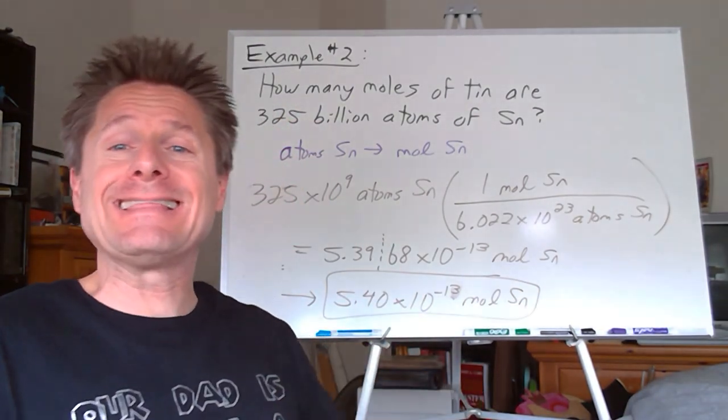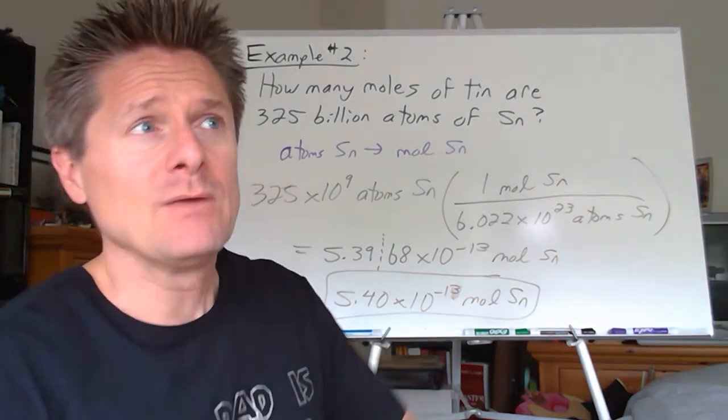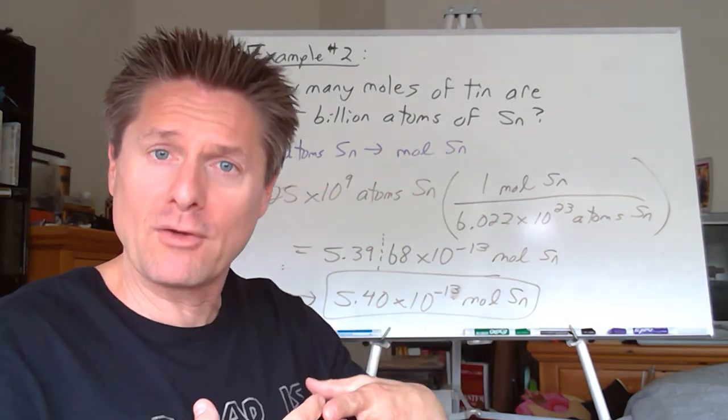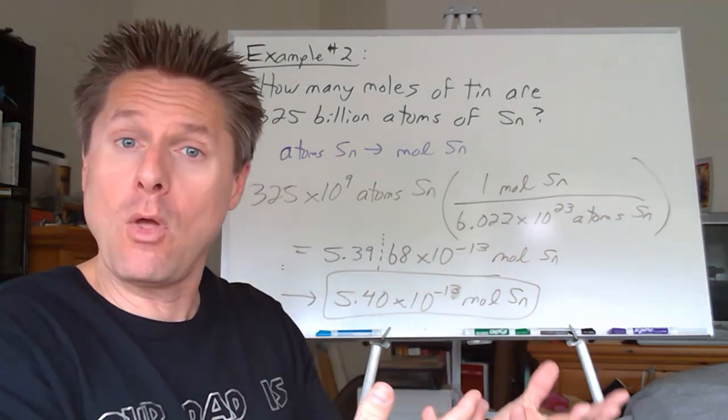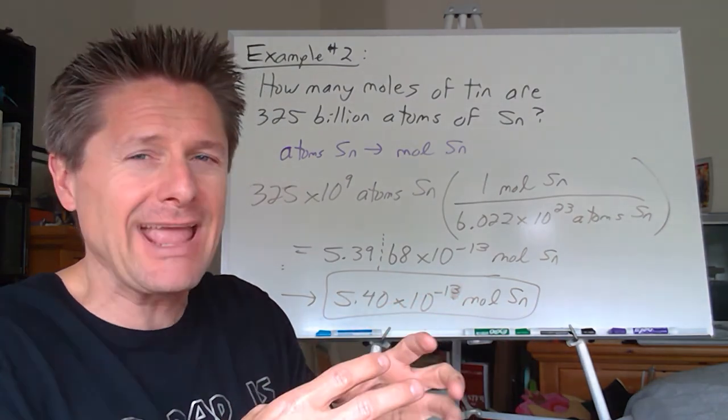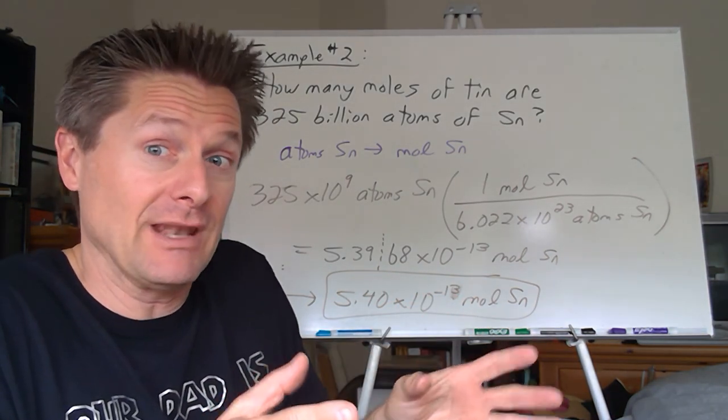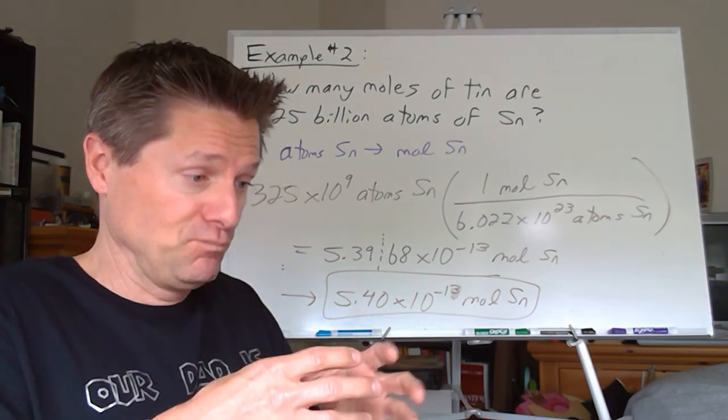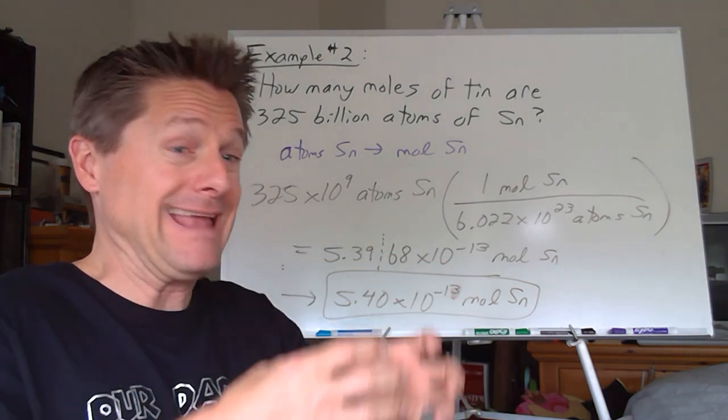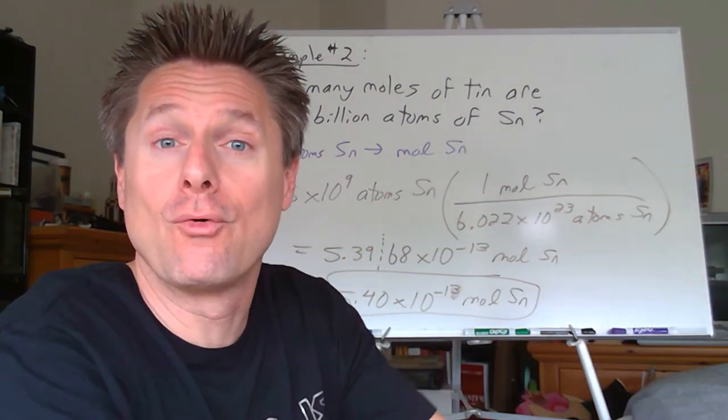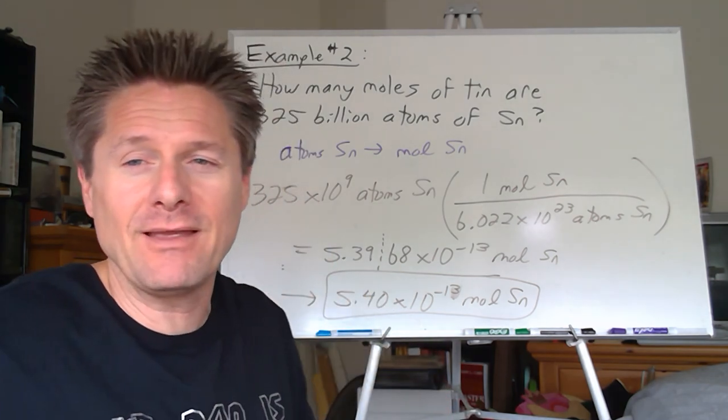So let's now take this to the next logical step. We can get from particles, number of particles, atoms, ions, or molecules, to number of moles. But that's just the hub zone. We usually don't stay in moles. We want to get to something we can use in lab like grams or milliliters. So let's take the next logical step and get from moles to grams. Counting by weighing, my friends.